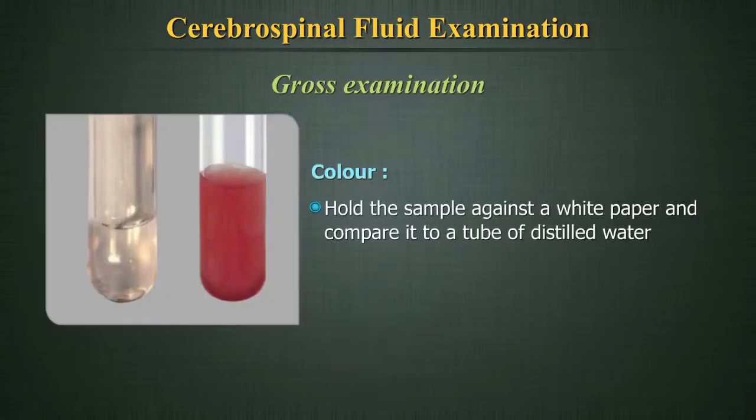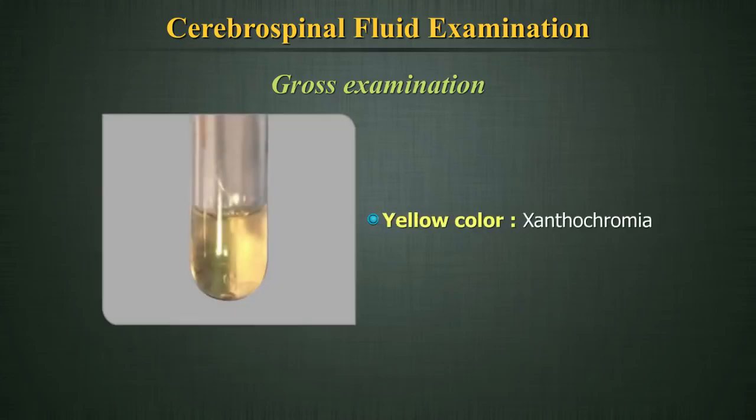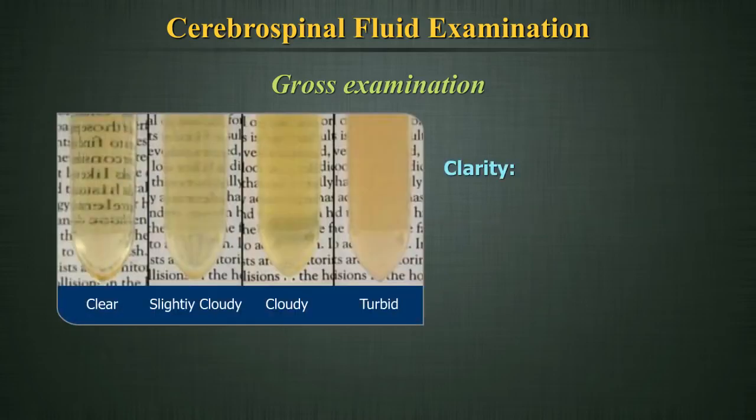Gross examination — Colour: Hold the sample against a white paper and compare it to a tube of distilled water. If it has any colour at all, it is abnormal. The cause can be the presence of blood, either due to a pathology or due to trauma during the procedure. Yellow colour in CSF is called xanthochromia, due to previous hemorrhage and lysis of RBCs.